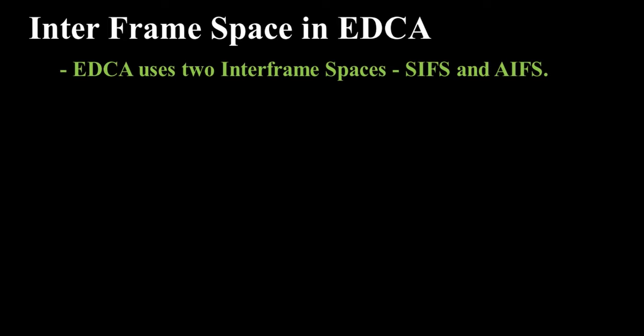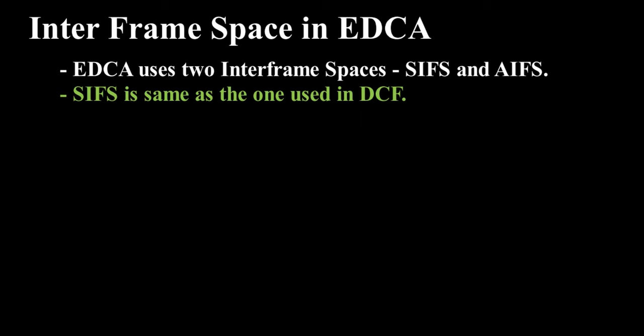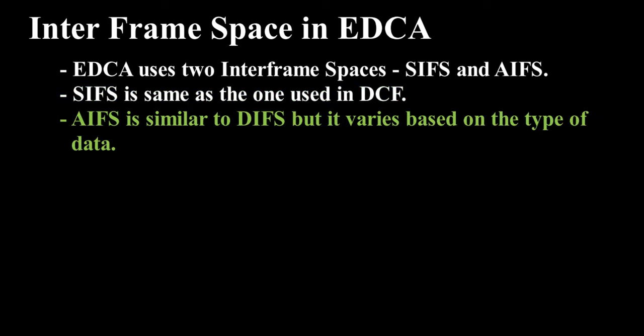Interframe Space in Enhanced Distributed Channel Access. EDCA uses two interframe spaces: Short Interframe Space (SIFS) and Arbitration Interframe Space (AIFS). Short Interframe Space is the same as the one used in the Distributed Coordination Function. Arbitration Interframe Space is similar to the DCF interframe space but varies based on the type of data.